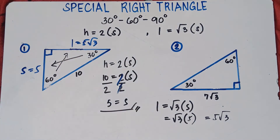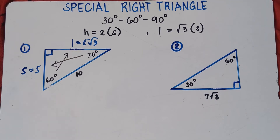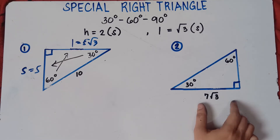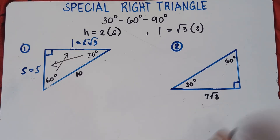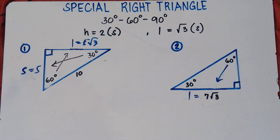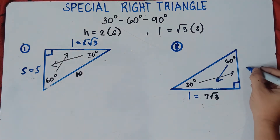That's it for number one. For example number two, we have given 7√3. This is the longer leg because it is opposite the 60-degree angle. The shorter leg is opposite the 30-degree angle.